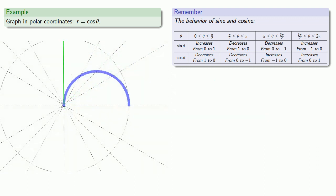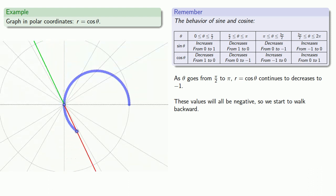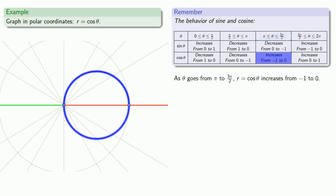We can keep going. As theta goes from pi over 2 to pi, r, or cosine theta, continues to decrease to negative 1. Since these values are negative, we're actually walking backwards, and we might trace out a path that looks like this. As theta goes from pi to 3 pi over 2, r increases from minus 1 to 0. Since these values are still negative, we go backwards and retrace the steps we've already made.